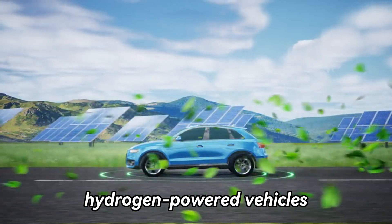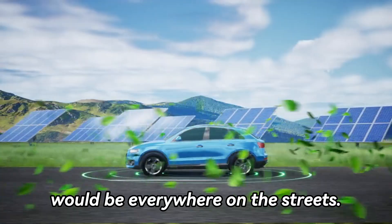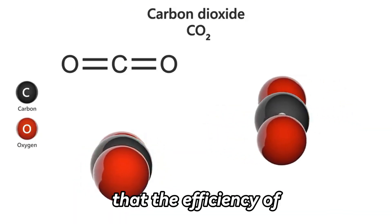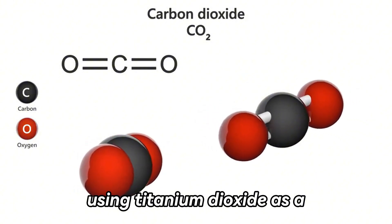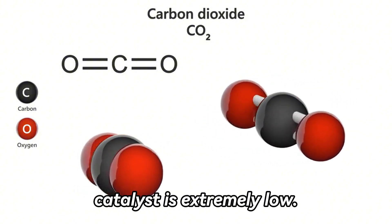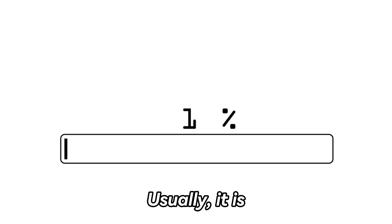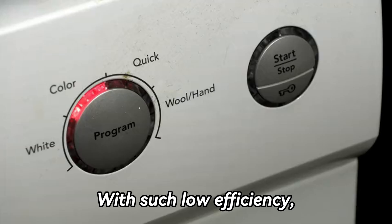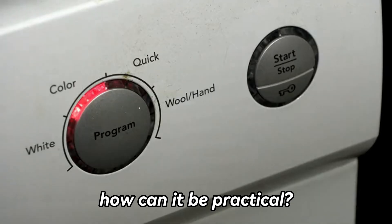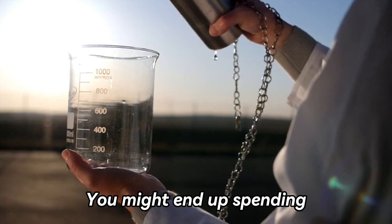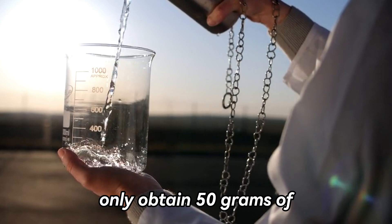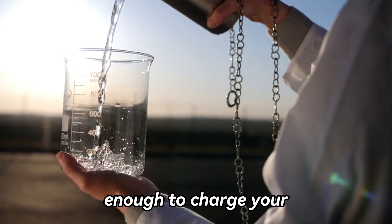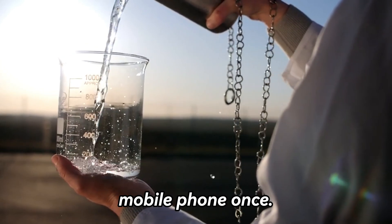And hydrogen-powered vehicles would be everywhere on the streets. The problem lies in the fact that the efficiency of photocatalytic water splitting using titanium dioxide as a catalyst is extremely low. Usually, it is less than 0.1%. With such low efficiency, how can it be practical? You might end up spending half a year exposing water to sunlight and only obtain 50 grams of hydrogen, which is just enough to charge your mobile phone once.